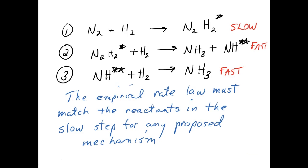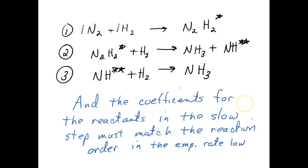We use mechanisms to investigate reactions further. Here we make them up given the rate law and the stoichiometry, and that helps us to investigate further into the reaction. Don't forget: the coefficients for the reactants in the slowest step must match the reaction order in the empirical rate law.